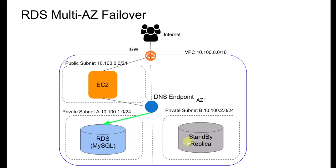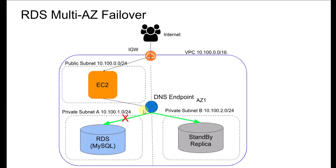Hi, this is Chetan. Welcome to this lecture. In this exercise, we want to simulate the RDS multi-AZ failover, which means we can have an RDS master and slave in different availability zones in the same VPC. If the RDS master fails — whether from AWS-initiated maintenance, patching, or hardware failure — the failover happens automatically in multi-AZ mode. The connection from the master automatically points to the standby replica, since RDS maintains a DNS endpoint that handles this transparently.